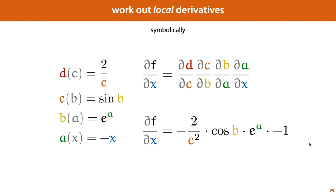So here we have an expression of the derivative using the local derivatives of our modules. Normally, if we were working out the derivative purely symbolically, we might fill in the values of c, b, and a to simplify the function. But this is where matters get too complex — once we start filling in these values, the function representing a neural network becomes too complex to simplify. So this is where we stop our symbolic analysis and switch to numeric computation.